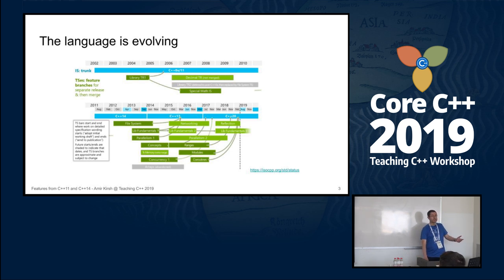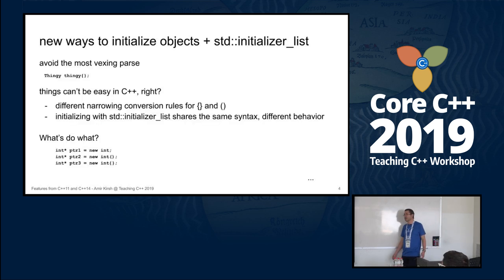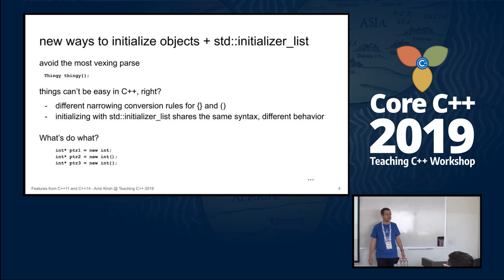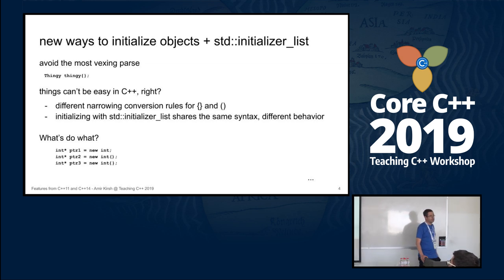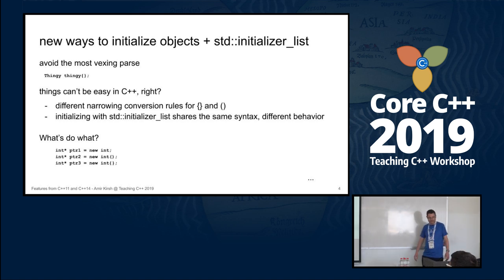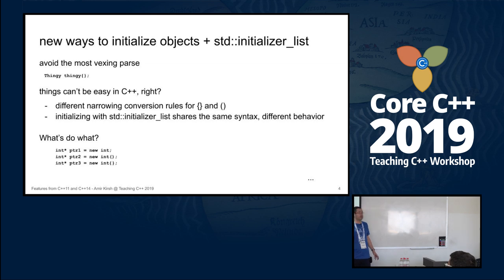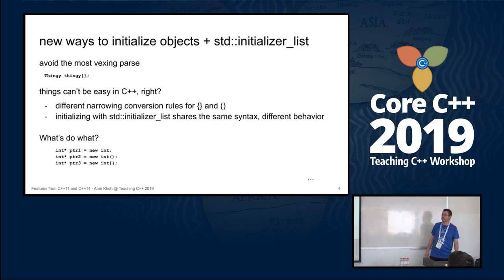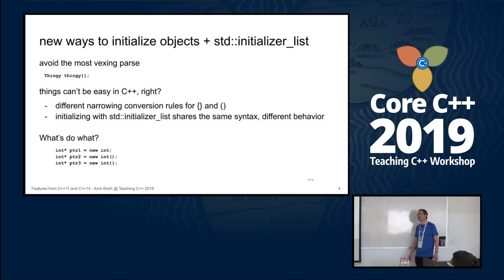We need to teach the evolving language — we cannot teach the old language. The very basics with C++11 start with new ways to initialize objects: std::initializer_list and both together. You can create an object with curly brackets. Why curly brackets? To avoid the most vexing parse. Wikipedia has an entry on the most vexing parse — it's so important it made it into Wikipedia.